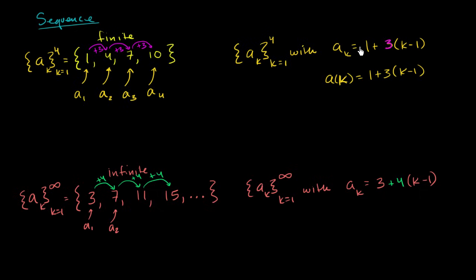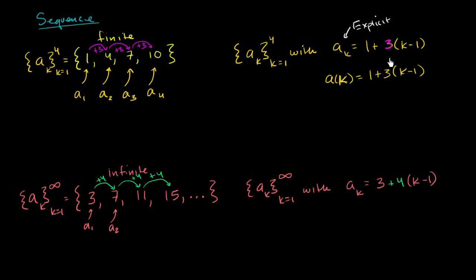So this is another way of defining this infinite sequence. In both of these cases I defined it as an explicit function — this right over here is explicit. And you might ask, well, what's another way of defining these functions? We can also define it recursively. Not every sequence can be defined as an explicit function or a recursive function, but many can — including arithmetic sequences where we keep adding the same quantity over and over again.